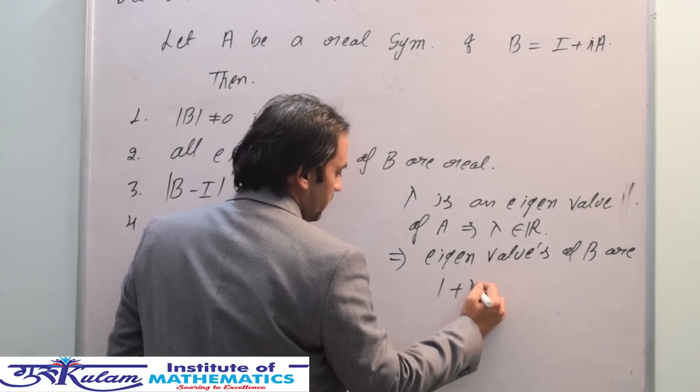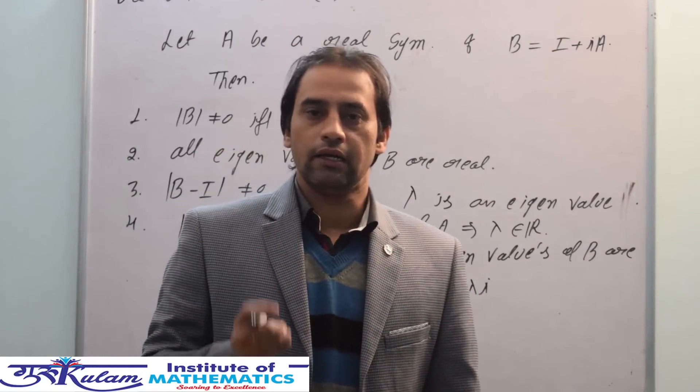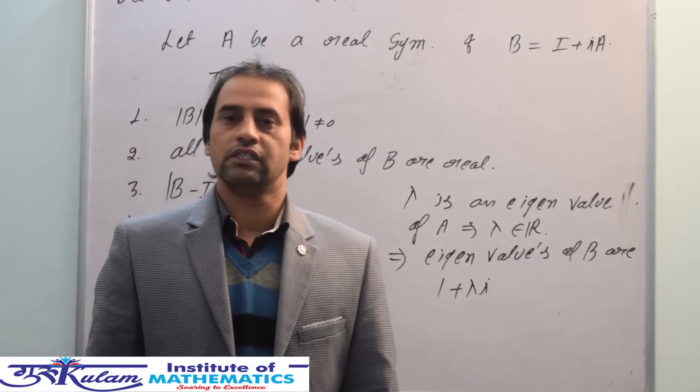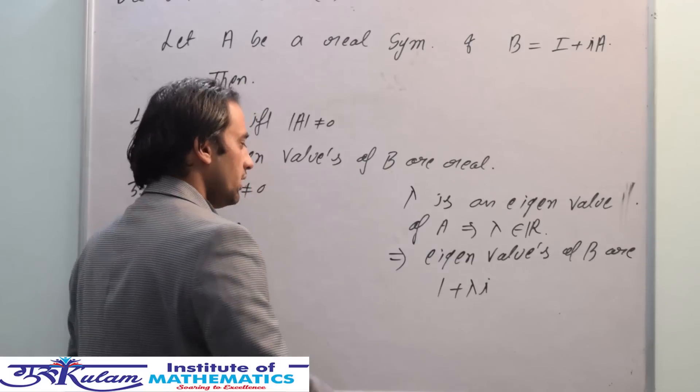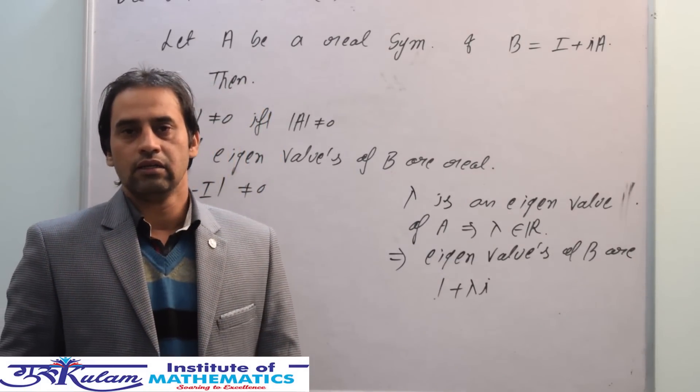These are the possible eigenvalues. We know that the product of eigenvalues equals the determinant. Since the eigenvalues of B are of the form 1 plus λi, the product of these eigenvalues is never zero.